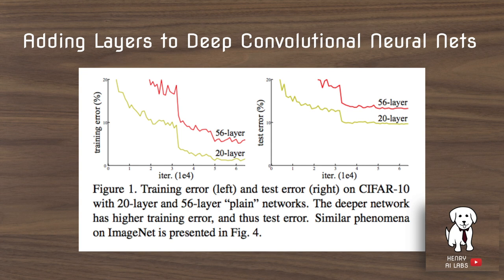The first contribution of the ResNet paper is showing that if you just continue to concatenate convolutional layers on top of activations and batch normalization, the training will eventually get worse, not better.